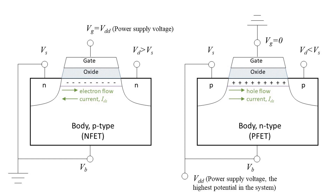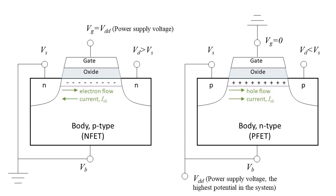There are two key voltages in a MOSFET: ground, which is zero, and the power supply voltage V_DD. All other voltages are between those two. If the body and source are in contact and grounded at zero volts, and the gate is at the power supply voltage — which is required for an N-FET to create the inversion layer — then the source is at zero, so whatever voltage is on the drain is higher than the source. The electrons are attracted to the drain, so electrons flow to the right, meaning the current I_DS goes to the left for an N-FET.